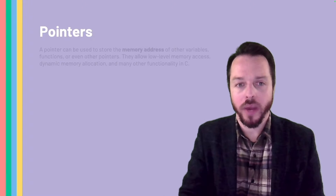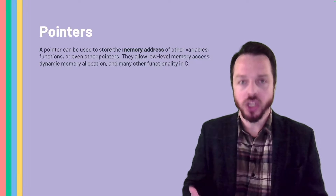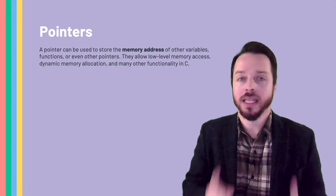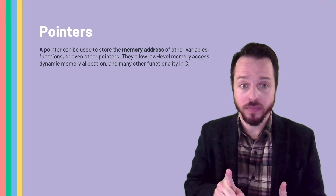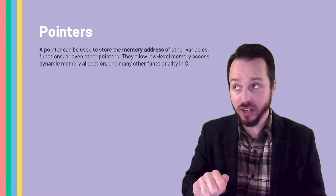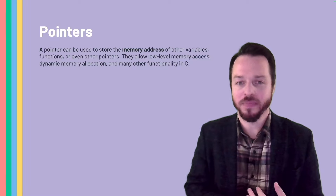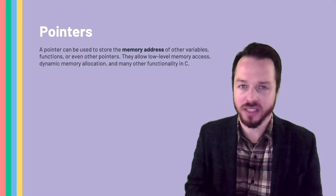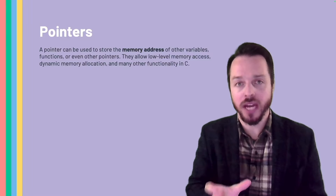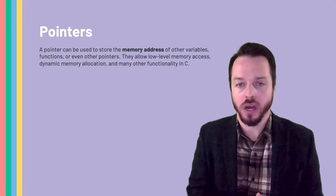Let's just get one thing out of the way. C is a language that allows us to work with pointers. So we're gonna have a variable that is a pointer. A pointer can be used to store the memory address of other variables, functions, or even other pointers. We can have a pointer that points to a pointer — a pointer pointer. Usually a pointer is just a little variable that holds the memory address of another variable. That's how these things are going to work out.